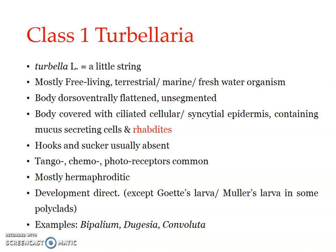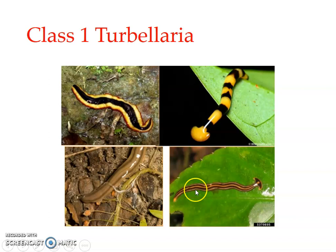Development is usually direct, giving a simple life cycle, except in the case of two larval forms — Müller's larvae and Götte's larvae — found in some polyclads. Otherwise the life cycle is simple with direct development. Important examples include Bipallium, Dugesia, and Convoluta. Most of them are elongated and string-like, which is why the group is named Turbellaria.